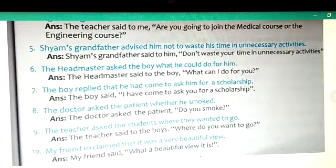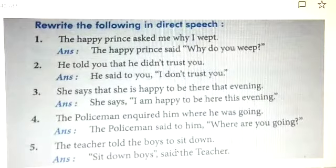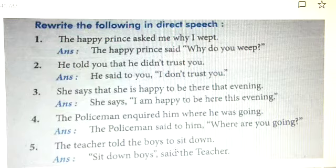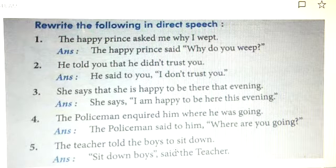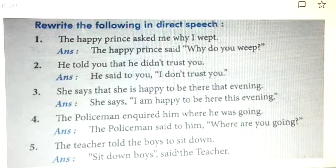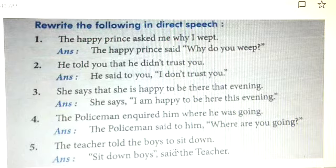Next exercise — rewrite the following in direct speech. One: 'The happy prince asked me why I wept.' Answer: 'The happy prince said, why do you weep?' Two: 'He told you that he didn't trust you.' Answer: 'He said to you, I don't trust you.' Three: 'She says that she is happy to be there that evening.' The reporting verb is present tense, so: 'She says, I am happy to be here this evening.' Four: 'The policeman enquired where he was going.' Answer: 'The policeman said to him, where are you going?' Five: 'The teacher told the boys to sit down.' Answer: 'Sit down, boys,' said the teacher.